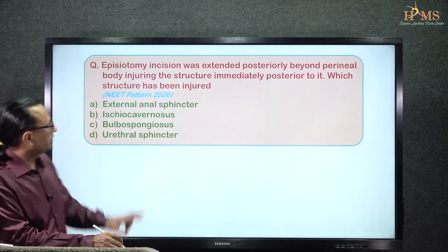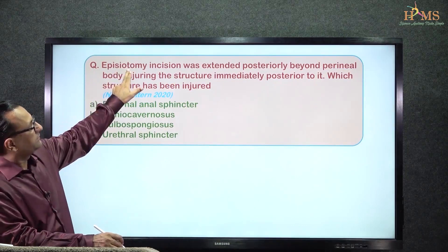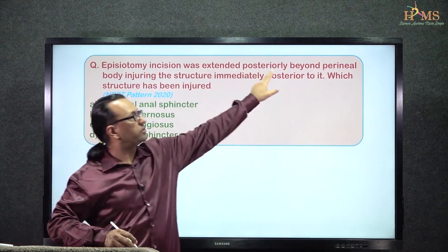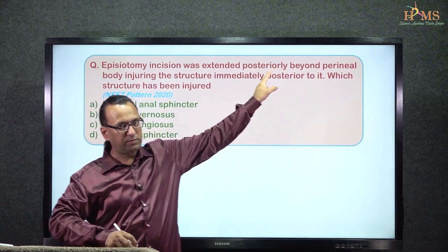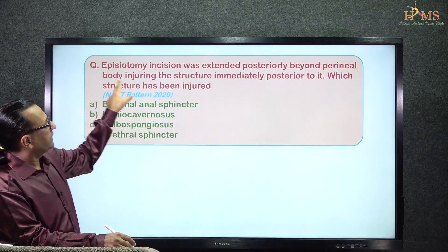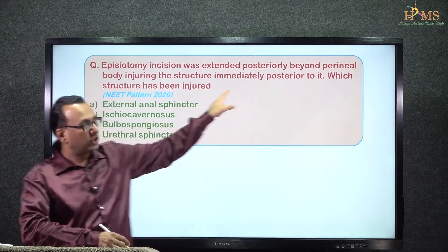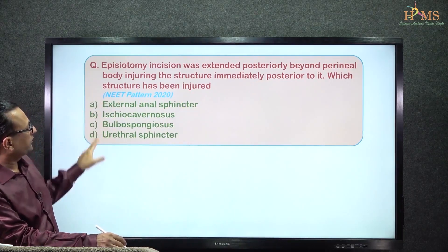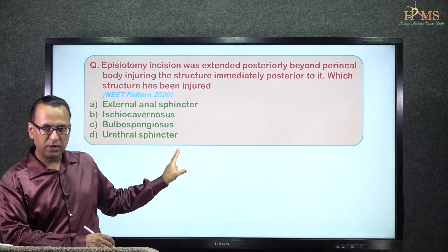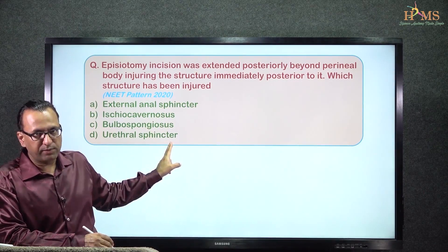When we look at this question, it is asking us about episiotomy and how it was extended posteriorly beyond the perineal body, capturing some of the structure immediately posterior. We want to know which of the following muscles has been compromised lying behind the perineal body.